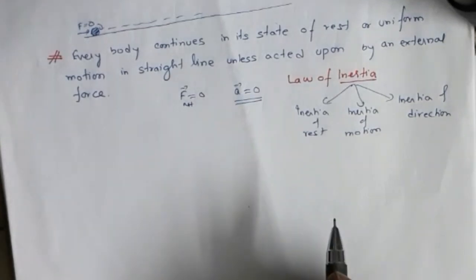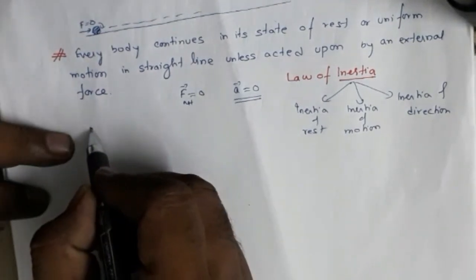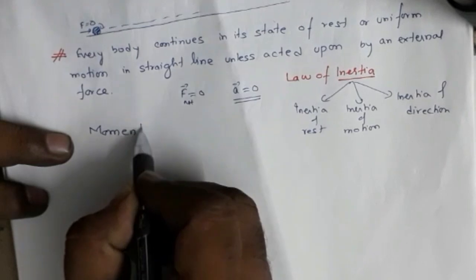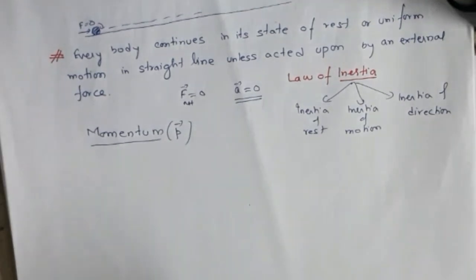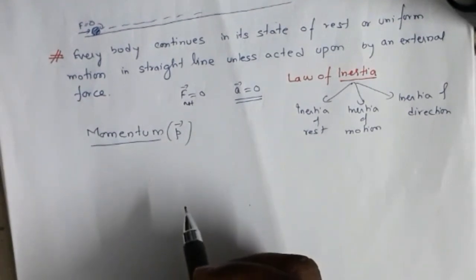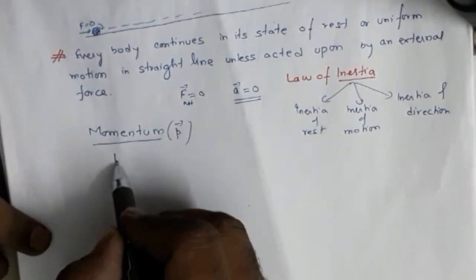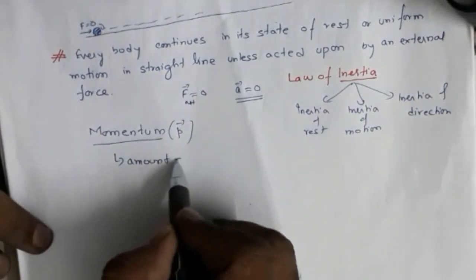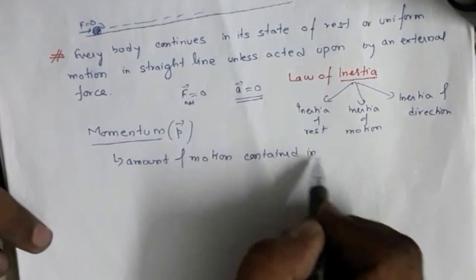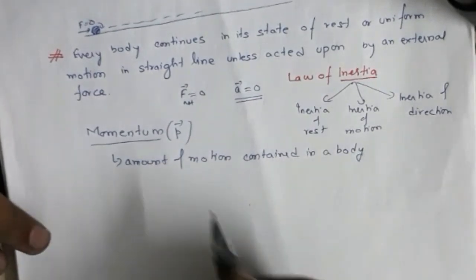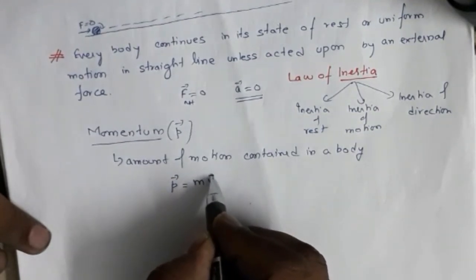Before proceeding to Newton's Second Law, we need to understand momentum, denoted by the symbol p. It is a vector quantity. Momentum is the amount of motion contained in a body, and mathematically it is expressed as p = mv, that is, mass multiplied by velocity. Its dimensional formula is M·L·T⁻¹, and its unit is kg·m/s.